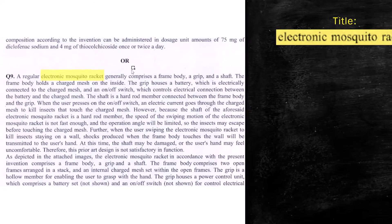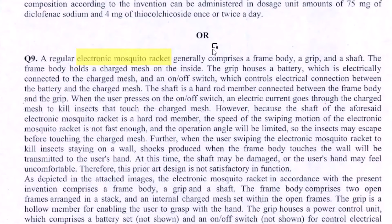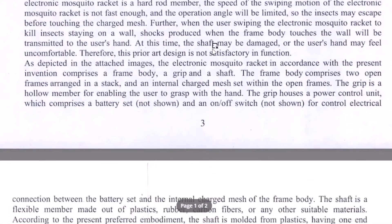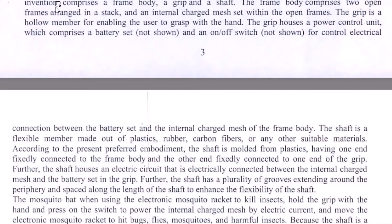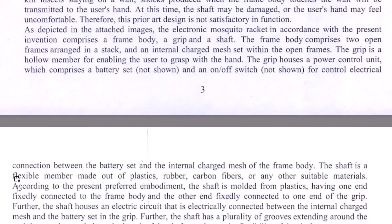Let's move to the second requirement, which is drafting a set of claims. As usual, we go towards the section of the disclosure that provides all details about the invention — the summary section. In this small disclosure, the second paragraph talks about the entire detail about the invention: a racket having a frame body, a grip, a shaft, what the frame body includes, and how the grip and shaft are constructed.